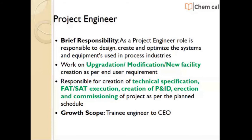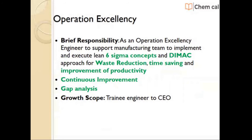Operation Excellency: As an operation excellency engineer, you support the manufacturing team to implement Design for Six Sigma and Lean Six Sigma concepts for waste reduction, time and cost savings, and improvement of productivity. Kaizen — 'Kai' means continuous and 'Zen' means improvement, so Kaizen means continuous improvement. Responsibilities include supporting manufacturing heads to develop capacity and utilization tools, providing continuous improvement training to personnel, and performing gap analysis as part of the continuous improvement process.